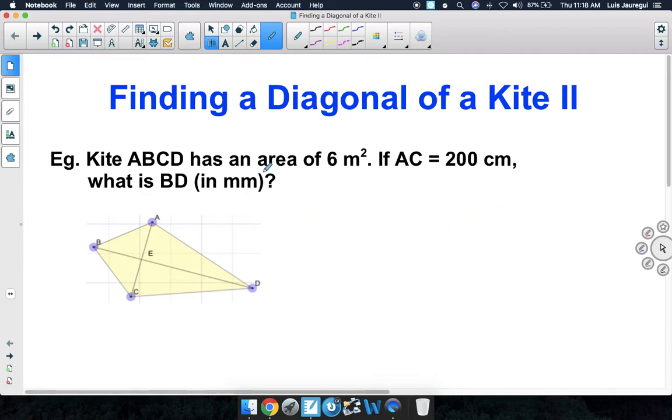Let's take a look at what we're given. We're given that the area of the kite is 6 square meters, and also that segment AC has a length of 200 centimeters. Looking at the diagram, we realize that AC is simply one of the diagonals of the kite, and that has a length of 200 centimeters.